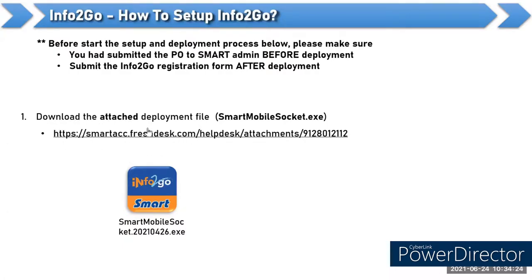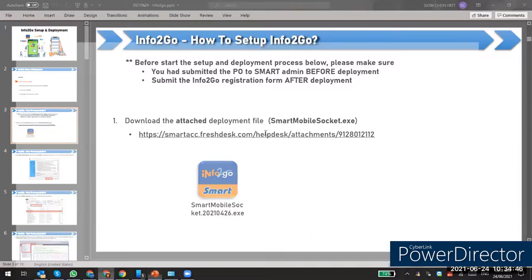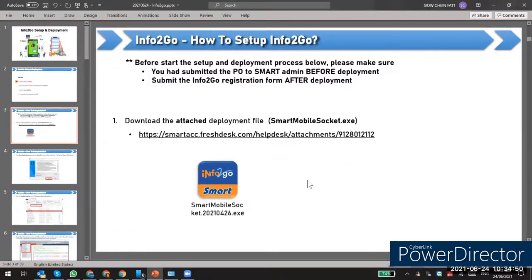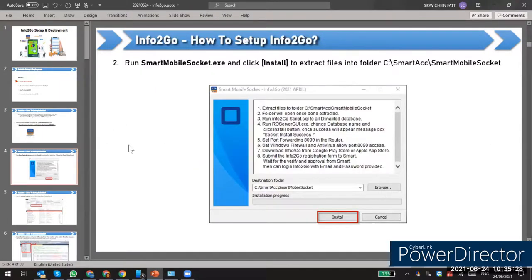First, you have to download the SOC installer from our e-support. You can click there to go to our e-support to get the installer. Every time you install, you have to make sure you install the latest one. We keep it updated, so before you do the installation for info2go setup, make sure you get the latest installer from our e-support.